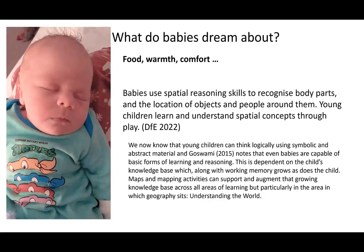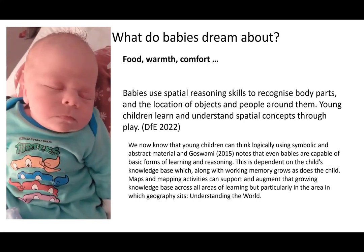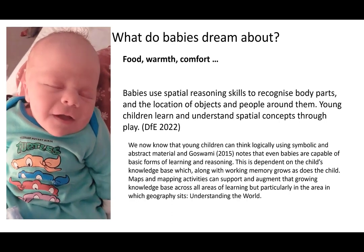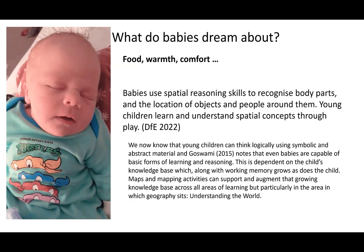What do babies dream about? Food, warmth, comfort. The DfE notes that babies use their spatial reasoning skills to recognise body parts and the location of objects and people around them, and young children go on to learn these concepts through play. Tuan commented that babies are innate mappers in the sense that they learn to orientate themselves towards their mothers, towards areas of comfort and food. Goswami tells us that even very young children can think logically using symbolic and abstract material.